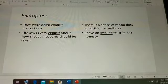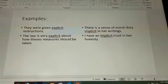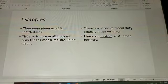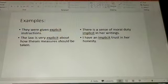Okay, let me explain you the difference between implicit and explicit by showing you these sentences. They were given explicit instructions, means clear instructions, not anything which is not understood or which is hidden.